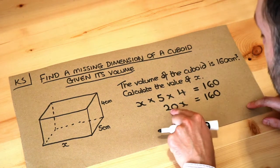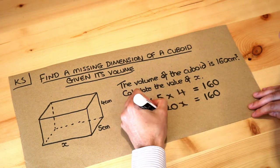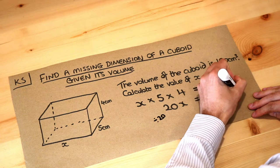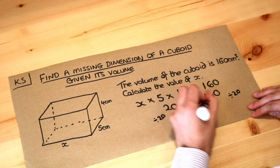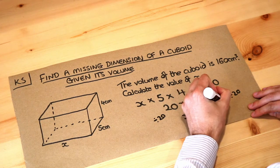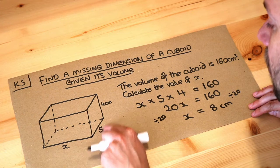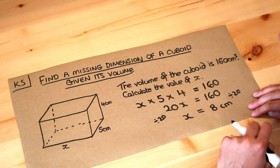And then if we've got 20 lots of x, we just want x, we just divide both sides by 20. And then x is equal to 160 divided by 20 which is 8. So that final length x must be 8, so that 8 times 5 times 4 would give you 160.